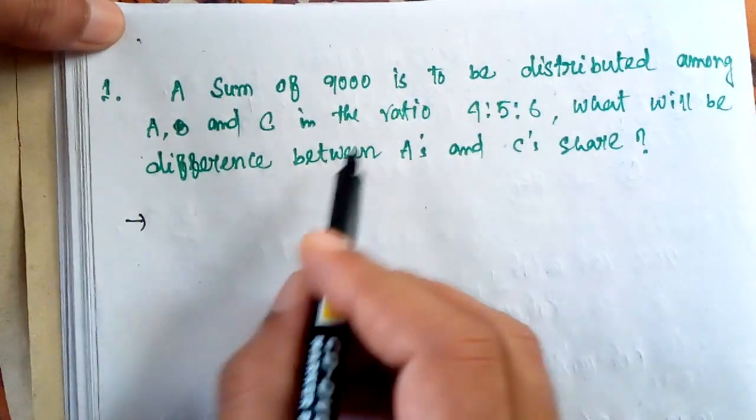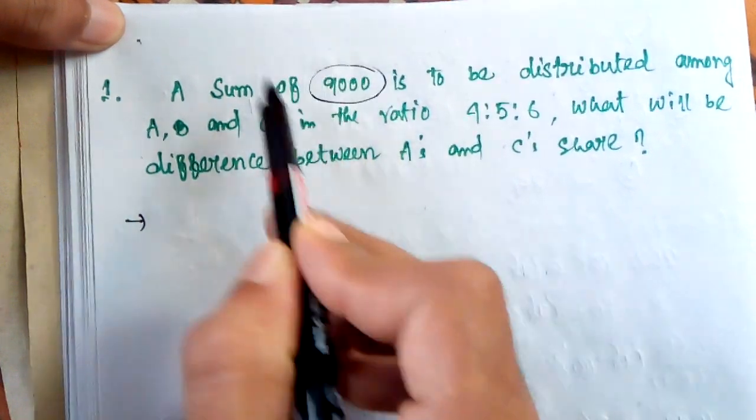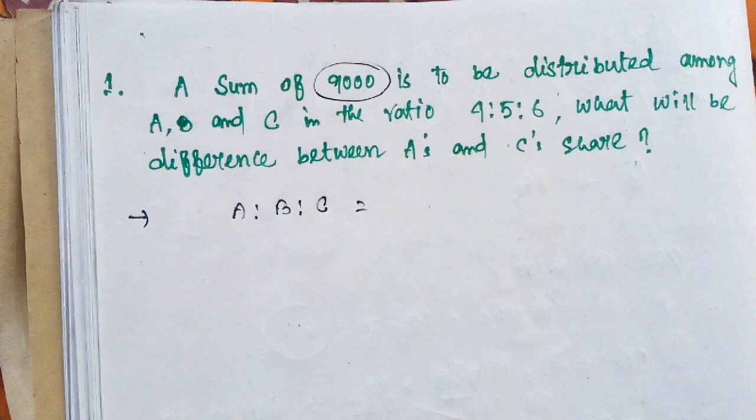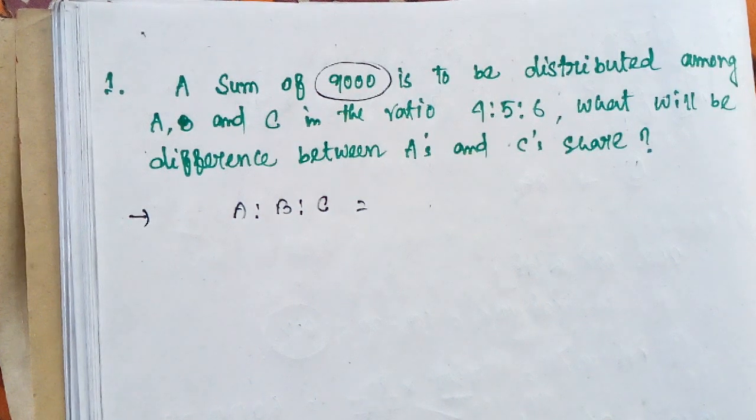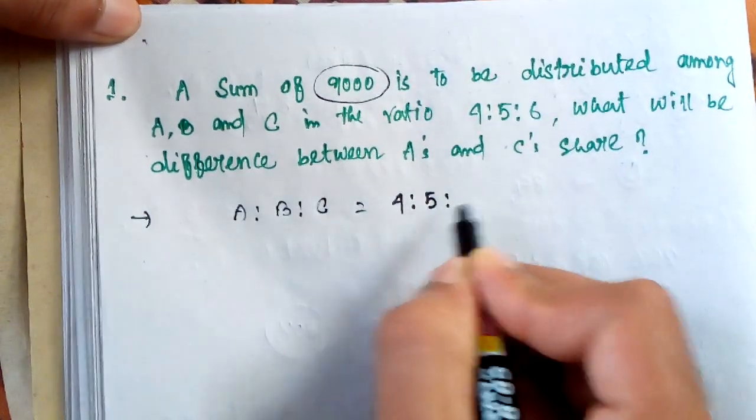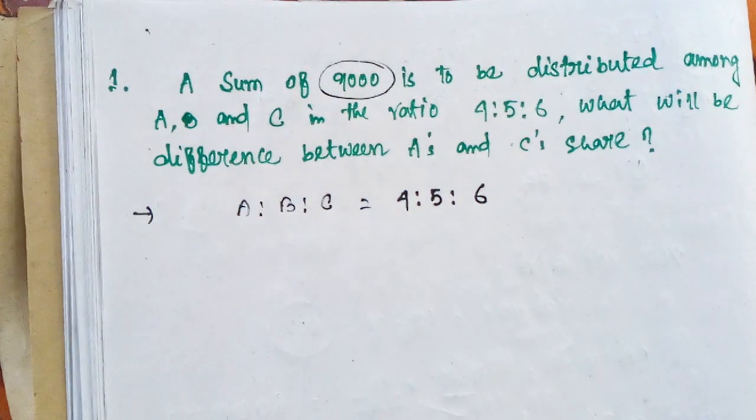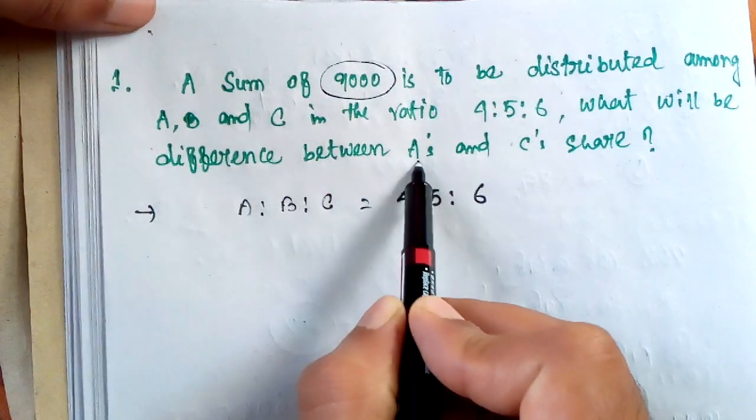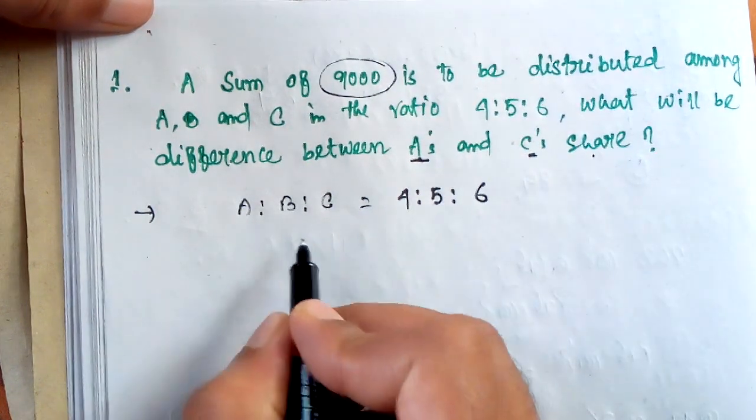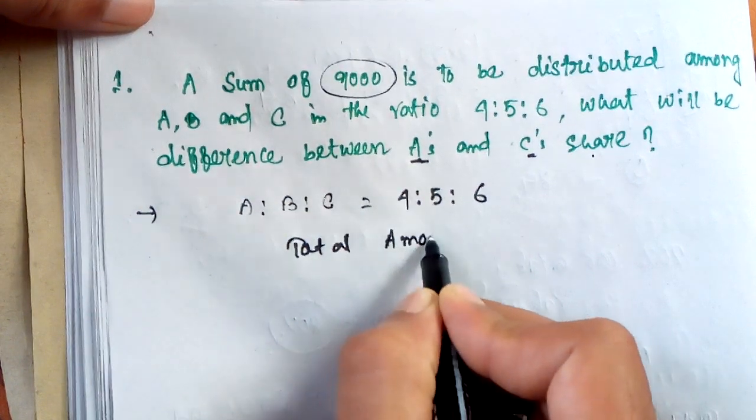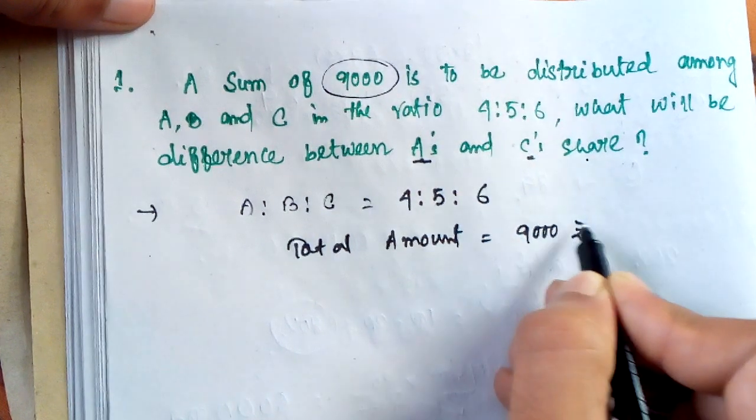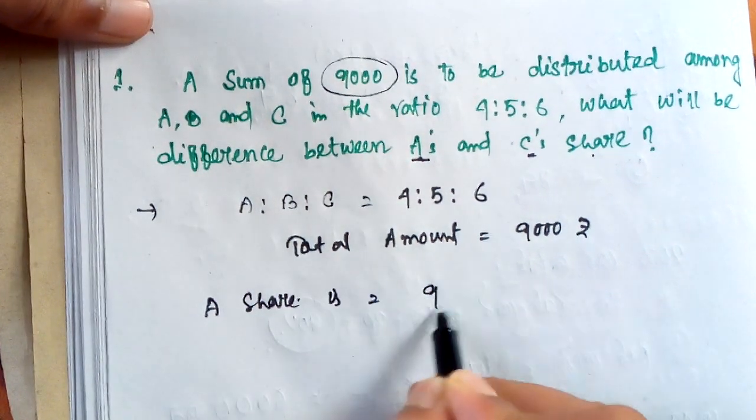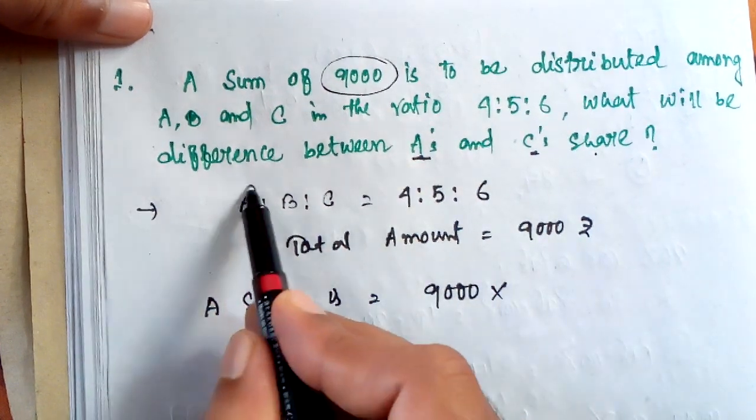At first, we can see the total sum here is 9000 rupees and the ratio of A, B and C is 4 is to 5 is to 6. Now, we write here 4 is to 5 is to 6. What will be the difference between A's shares and C's shares? Total number of amount here is 9000 rupees and